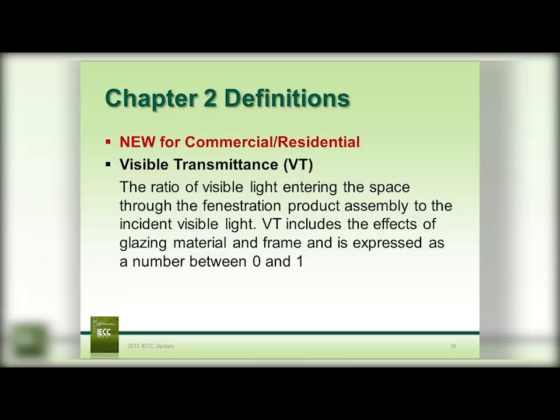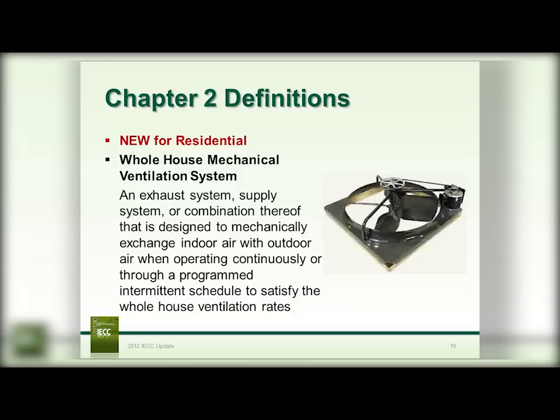A new definition for both commercial and residential is visible transmittance: the ratio of visible light coming through glazing, expressed as a number between 0 and 1. There is also a residential definition for whole house mechanical ventilation system, and now there is language in the code that recognizes and tells us how to utilize it.